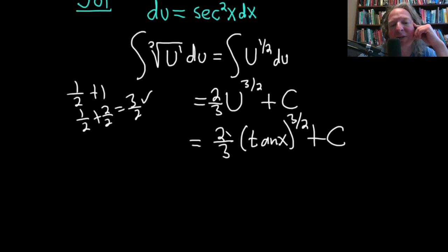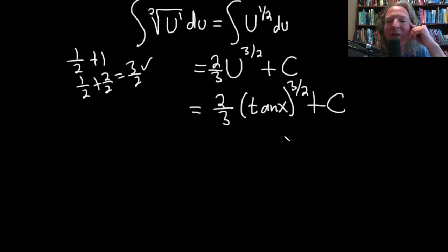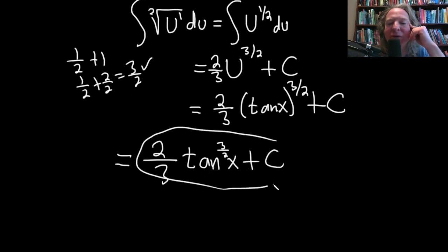You could leave it like this or you could write it using the shorthand notation that people often use for trig functions. It's two thirds tangent and then you can put the exponent here, three halves, and then an x, and then plus C. I don't really think it matters too much.